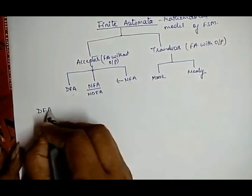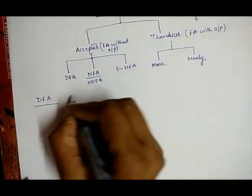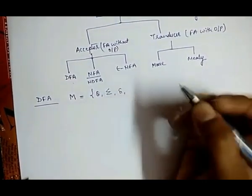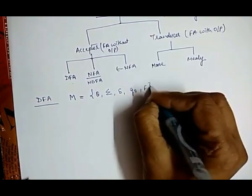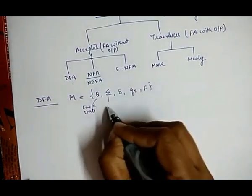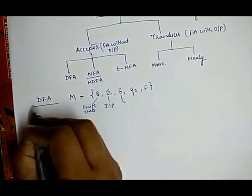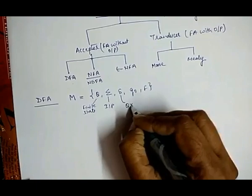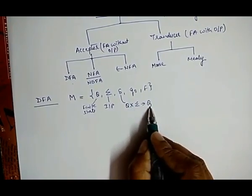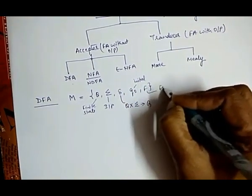In this video we discuss the DFA technique — Deterministic Finite Automata. DFA is defined by five tuples: M = (Q, Σ, δ, Q₀, F), where Q is the finite set of states, Σ represents the input values, δ is the transition function defined as Q × Σ → Q (a set of states combined with input gives a new state), Q₀ is the initial state, and F is the set of final states.